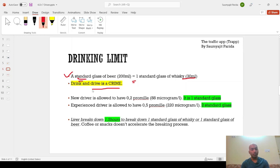And the main word to remember here is the standard, the word standard. Might be, there could be a question. In some of the years, there was some questions regarding this. A new driver is allowed to have 0.2 promil, the unit of measurement of alcohol in a human body is promil or microgram per litre. So, 0.2 promil is equivalent to 88 microgram per litre. And this is equivalent to one standard glass.